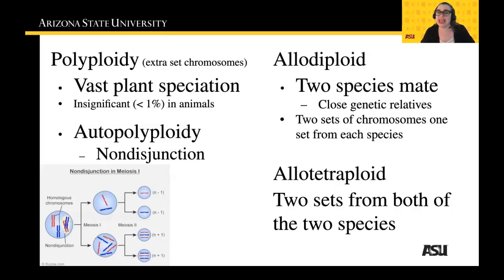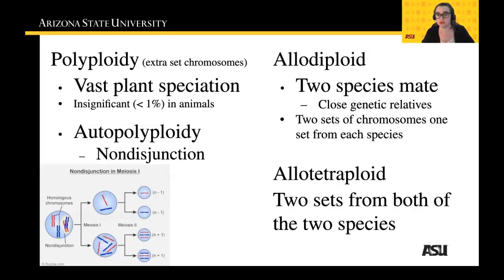Allotetraploid organisms have two full sets of chromosomes from two full sets of different species. It's as if species one's full chromosome series — the original from mom and from dad — plus species two's original from mom and dad come together and fuse. So now they have four sets of chromosomes instead of two, and that can create an alternate species as well.